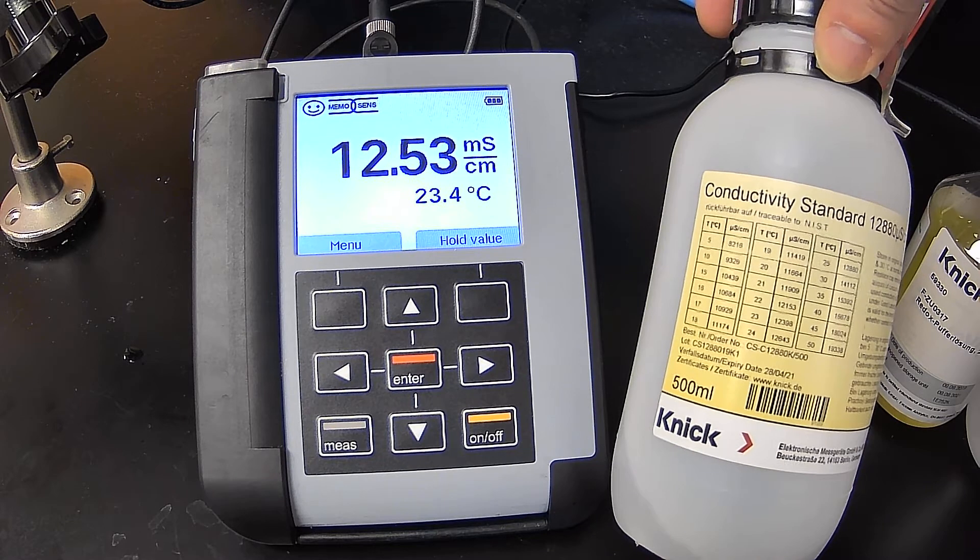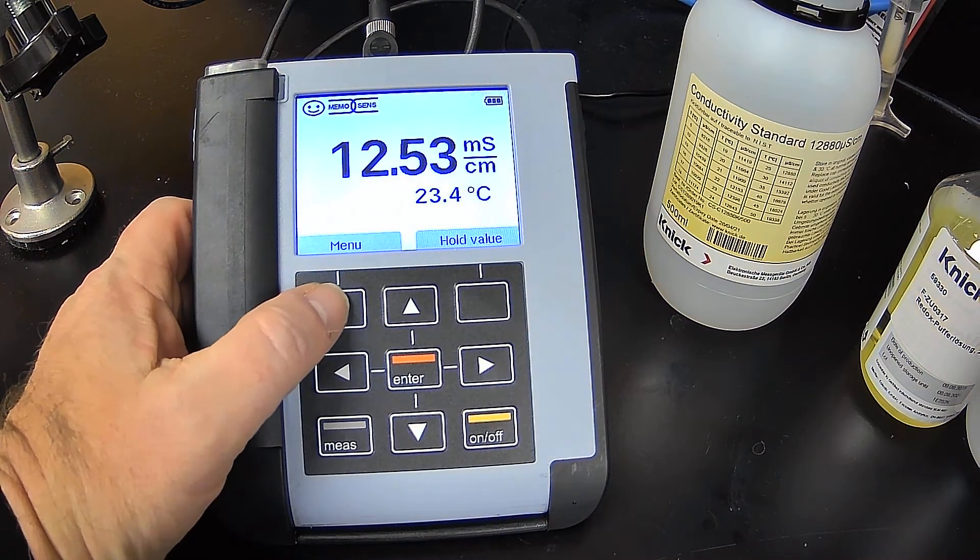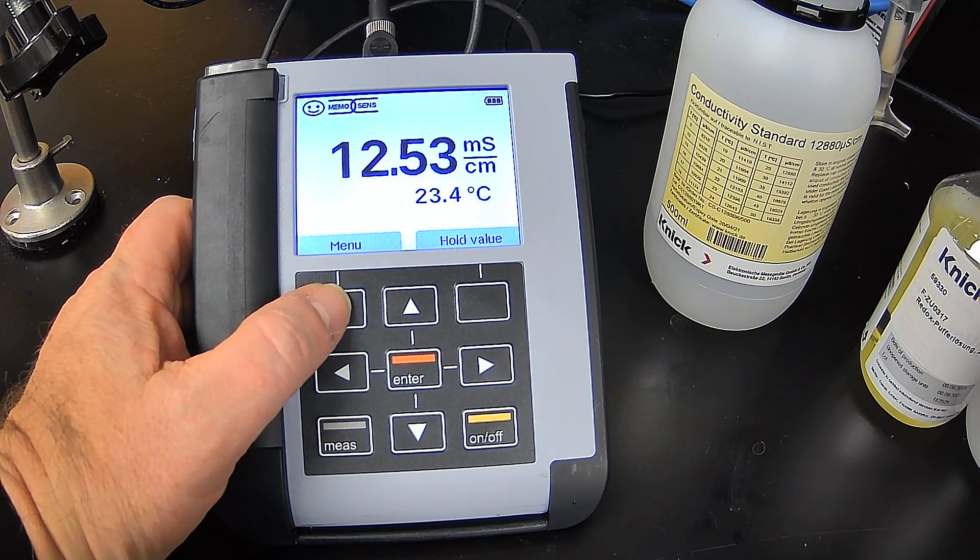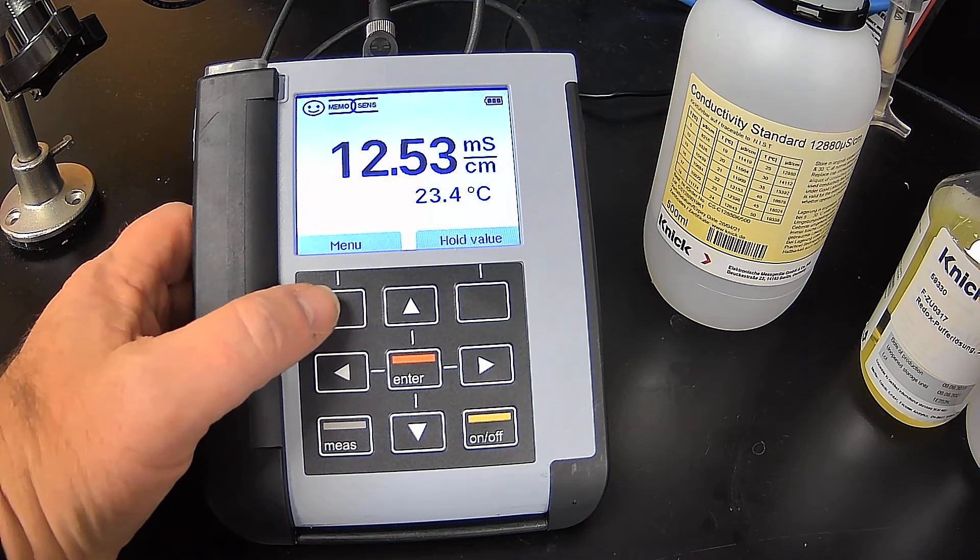Because we're doing a manual calibration, we need to make sure we use the solution value at the temperature we're currently reading, or as close as possible. In this case, we're at 23.4 degrees Celsius.